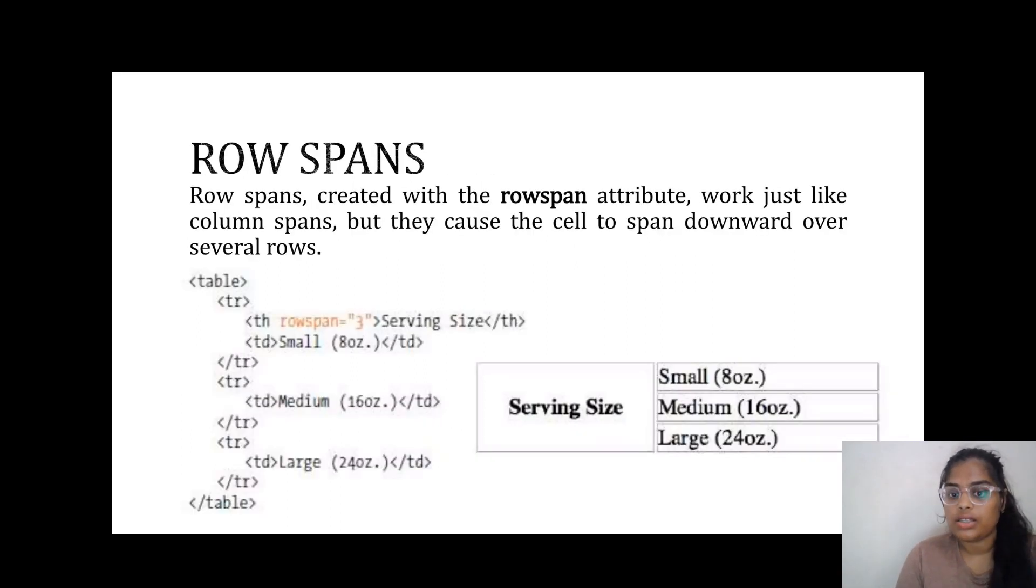Next is row span. Here for small, medium and large, we need a particular heading serving size as the main topic. So we use rowspan equals three for all three things. That is about spanning cells.